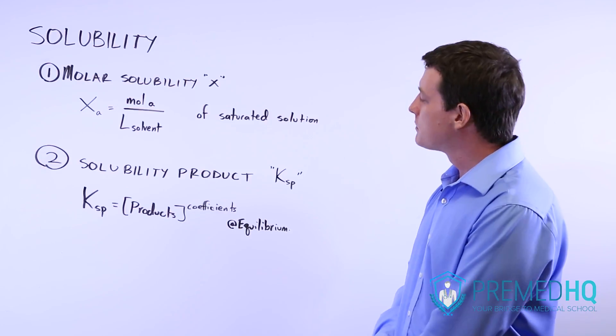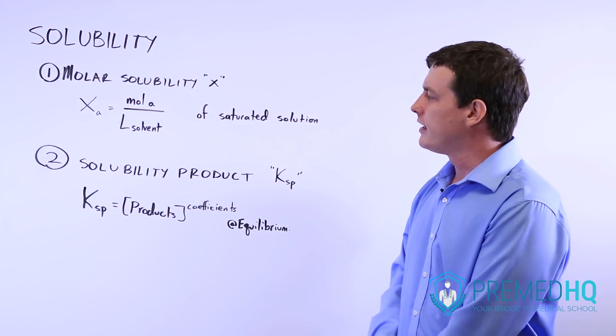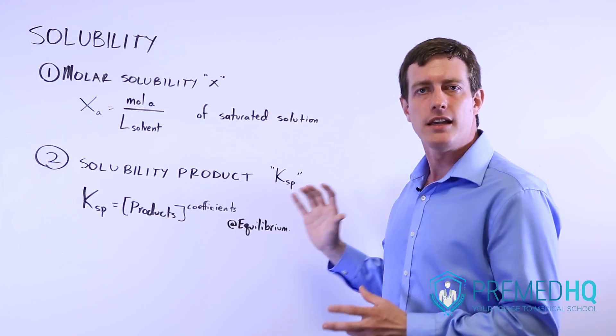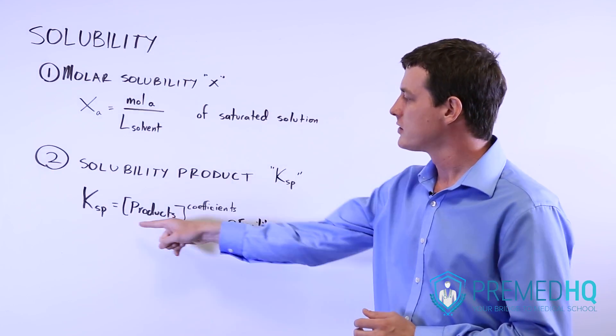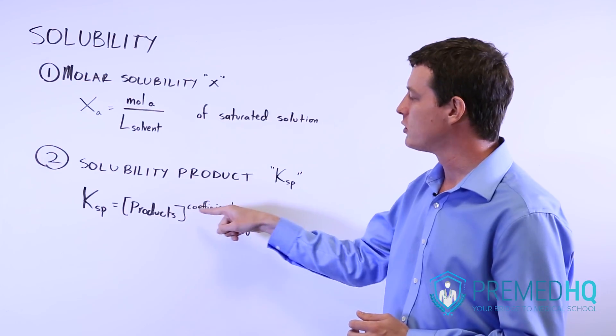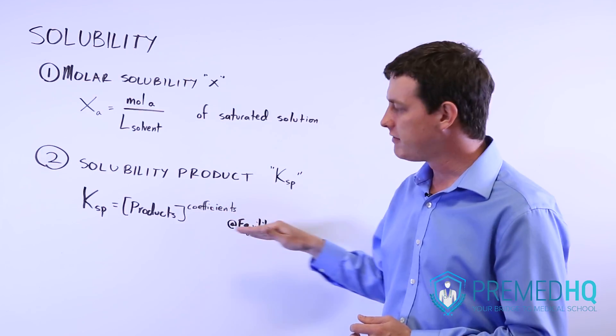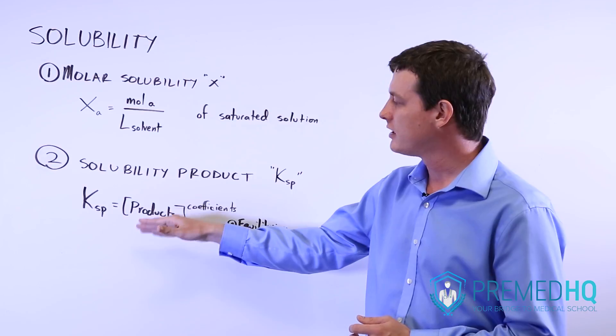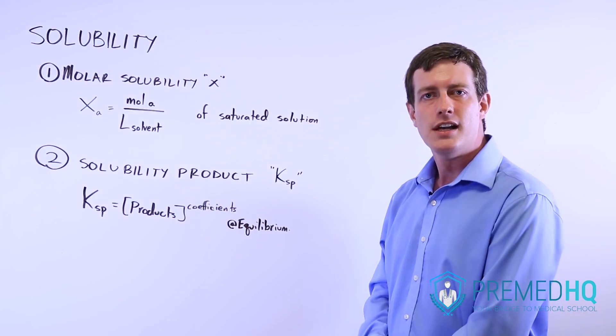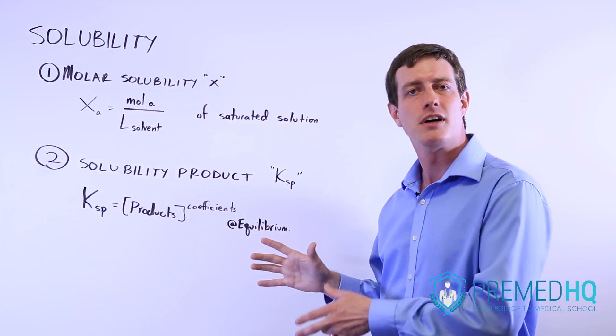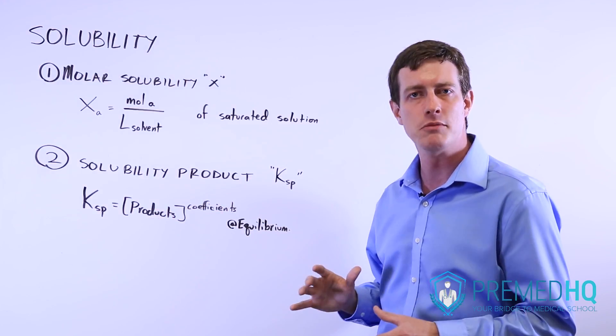The KSP, the solubility product, is equilibrium. It's a K value, and so remember with equilibria we look at the concentration of the products raised to their stoichiometric coefficients divided by the concentration of the reactants raised to their stoichiometric coefficients. Remember these concentrations are the equilibrium concentrations when they've reached equilibrium.